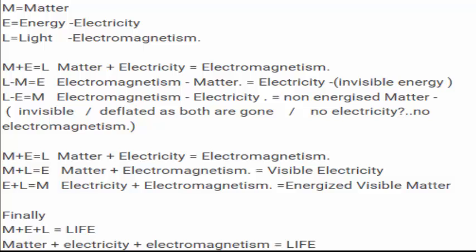M plus E equals L. Matter plus electricity gives electromagnetism. That means when electricity runs through matter, we get electromagnetism. This is true for every single atom in the universe. It is an electromagnet.